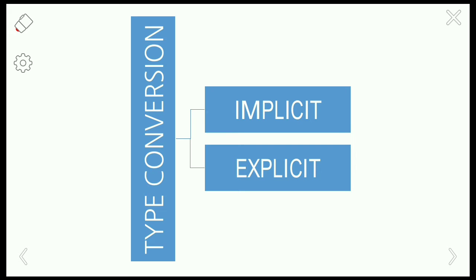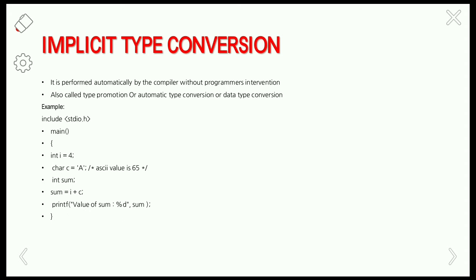First, we will look at implicit type conversion. Implicit or automatic type conversion is performed automatically by the compiler without the programmer's intervention. The compiler itself converts one data type into another. It is also called type promotion, automatic type conversion, or data type conversion.